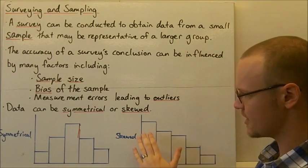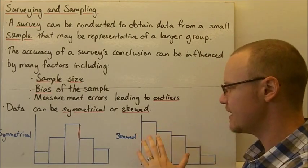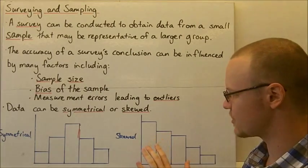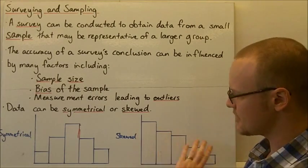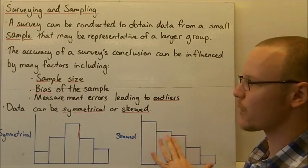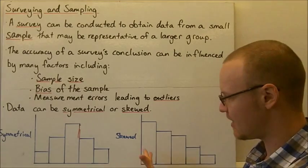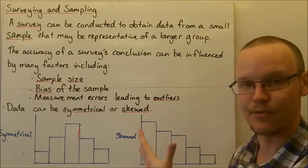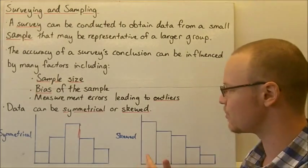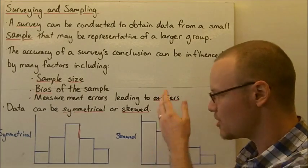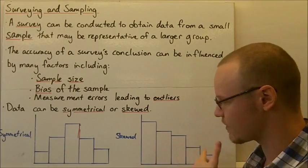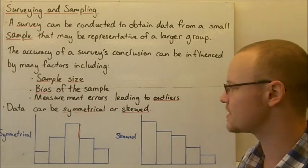In skewed data, the mean is often a little bit different to the median. And this isn't to say that this data is biased or anything, it might be just how it is. Maybe more people do have less of whatever it is that we're sampling or maybe the sizes are mostly around this area and there are only a few larger ones down here.